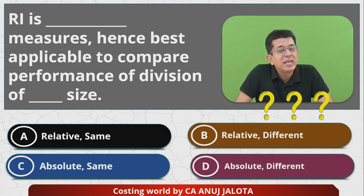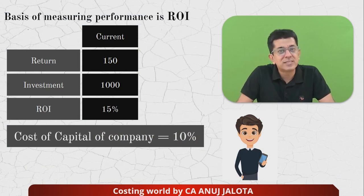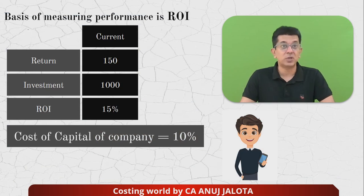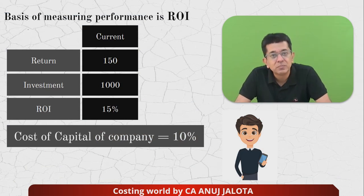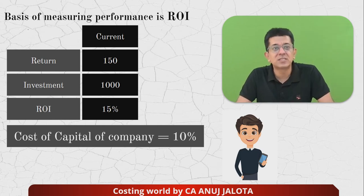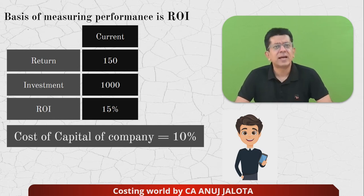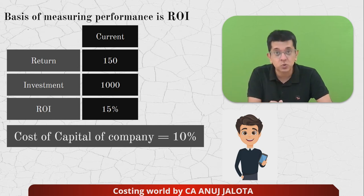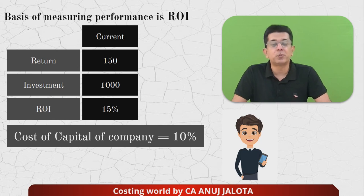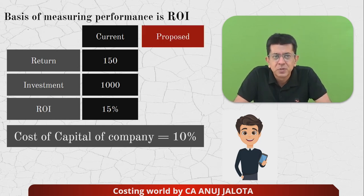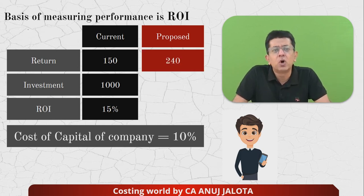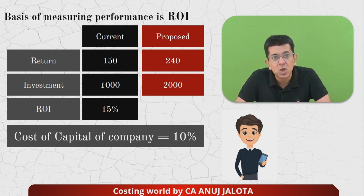Now let me explain the concept of RI. Mr. A currently heads Division A. His current data: return = 150, investment = 1000, ROI = 15%. Now suppose a new proposal comes — a proposed product that will fetch a return of 240, with investment in fixed assets and working capital of 2000. So the new project ROI = 240 / 2000 × 100 = 12%.